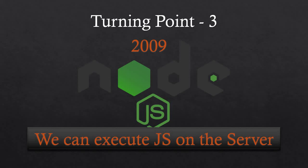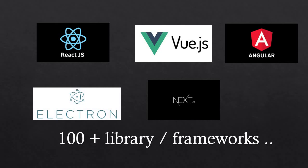Later we got lots of JavaScript frameworks for both front-end and server side. The most popular library is React.js, and Vue.js and Angular are popular frameworks. Electron is used for desktop applications, and Next.js is built on top of React.js. Every two to three months a new framework comes out on top of JavaScript, so there are now over a hundred libraries and frameworks helpful for designing modern web applications.